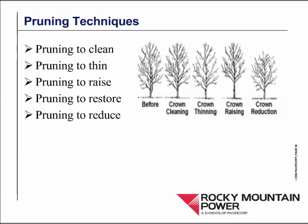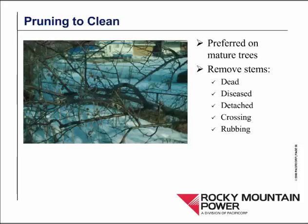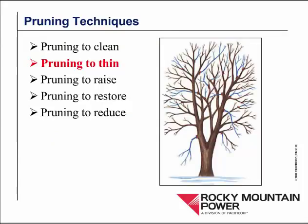ANSI A300 tells us that there are several different techniques for pruning: pruning to clean, pruning to thin, pruning to raise, pruning to restore, and pruning to reduce. Pruning to restore crown restoration is talking about trees that have been damaged by topping. Pruning to clean is something we would focus on mostly for mature trees — it's probably too late to correct any large defects in a mature tree. So we're just looking for stems that would be dead or diseased, detached, crossing, or rubbing. In that picture we see a mess of branches that are rubbing with one another and potentially injuring one another. So pruning to clean is a minimal amount of pruning done just to try to reduce the amount of disease that might be entering the tree through rubbing branches or dead branches.